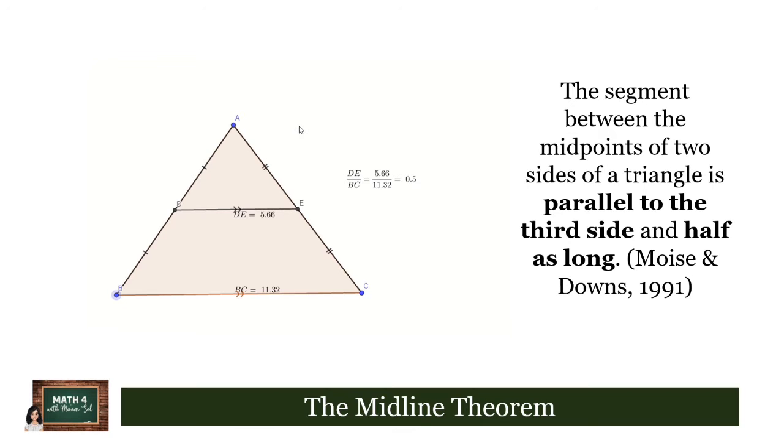So DE is the midline and BC is the third side. We are going to move the two vertices involving the third side and please observe the ratio between the length of the midline and the length of the third side.